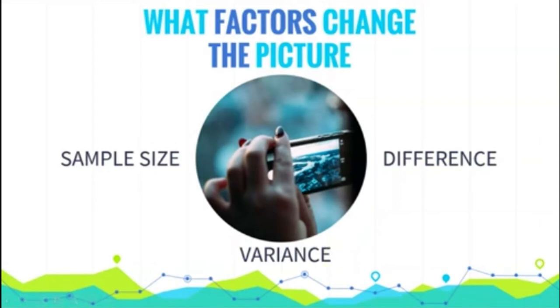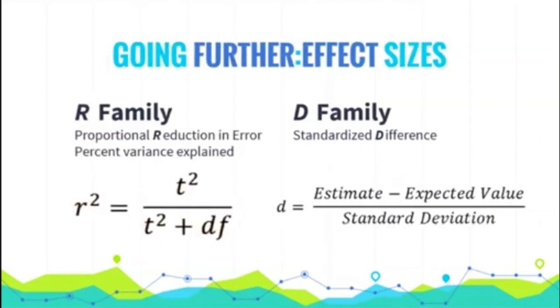So these things all impact t, which means that statistical significance is not just about how big the difference is. It is about how much evidence you have, i.e. the sample size. It's about how variable the scores are, and it is about the size of the difference. If you're trying to just look at size of difference, effect sizes are commonly used, such as R or Cohen's D.